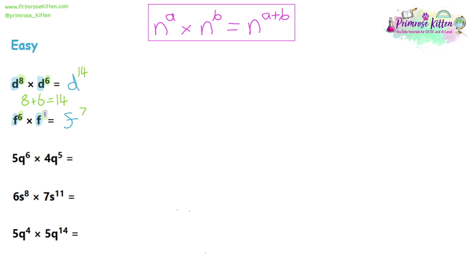Looking at question 3, we've now got some extra numbers involved, and this is where we have our biggest change from laws of indices with just numbers. The base is Q — we've got a Q on both sides, so let's write down Q. We've got indices 6 and 5, and we're multiplying, so we add those together: 6 plus 5 is 11. However, we've also got numbers at the start. We deal with those using normal rules: 5 times 4 is 20. So the answer is 20Q to the power of 11.